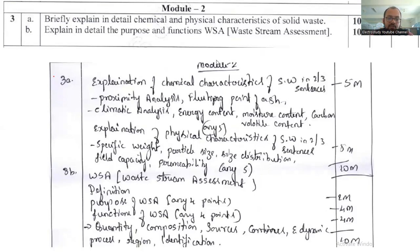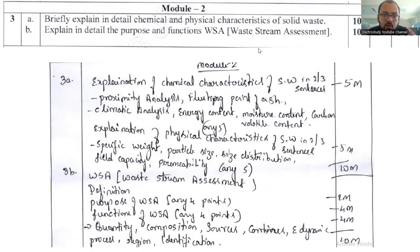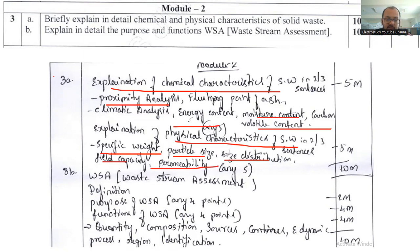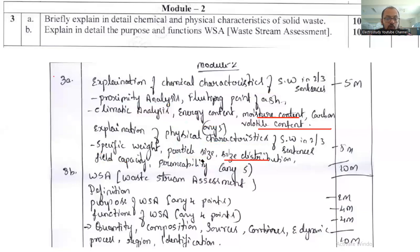Question 3a asks you to explain in detail the physical and chemical characteristics of solid waste. For physical characteristics, cover mass, volume, density, specific weight, particle size, construction, field capacity, and permeability. For chemical characteristics, cover proteins, vitamins, lipids, calorific value, energy content, moisture content, carbon, and volatile content — also include proximate analysis. Prepare a checklist but do not deviate from the topic.